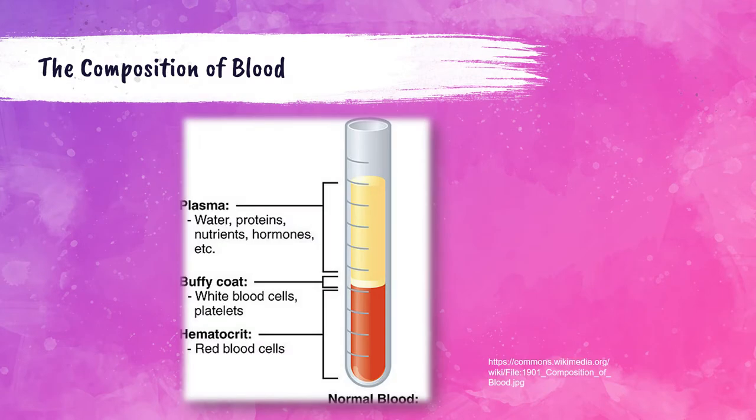Here's a picture showing the contents of blood — this is a spun-down, centrifuged blood sample. The top yellowish fluid is the plasma, which contains primarily water with proteins, hormones, enzymes, etc. The bottom red part in this photo is the red blood cells, or erythrocytes.